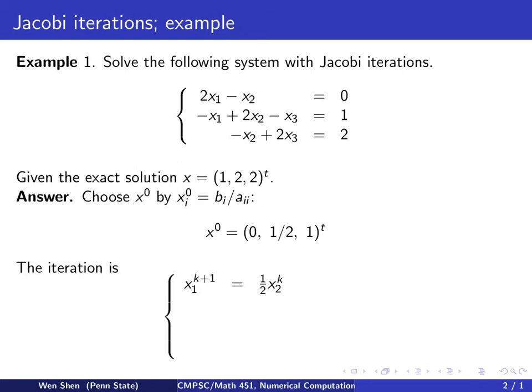So here is the iteration. For equation 1, I keep the diagonal element on the left and move everything else to the right. And then on the right-hand side, this becomes x at level k, and the left-hand side becomes at k plus 1.